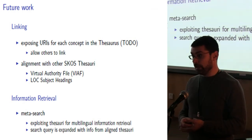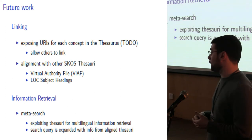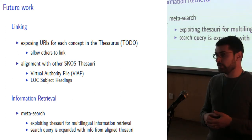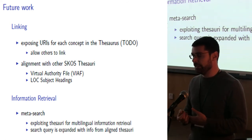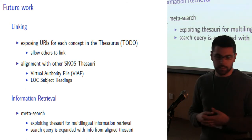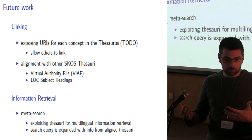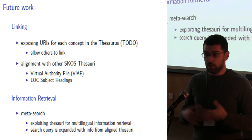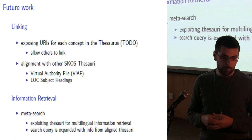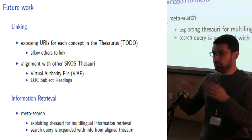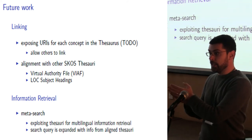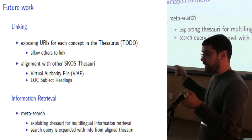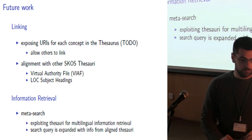For the future, the idea is exposing URIs for each of the concepts in the thesauri, in order to allow other people to link to them. Another perspective is to try to align our thesauri with the Library of Congress Subject Headings, for instance, which is now exposing data as linked open data, or the Library of Congress authority file. Things that you can do after you have converted into a more semantic format and aligned different vocabularies — for instance, to allow for meta-search, expanding queries: when you want to do a meta-search over some data and you have aligned vocabularies, you can expand the search key by looking up the word in another vocabulary. So if you're searching for one name in one language and you have aligned it with another vocabulary with labels in other languages, you can expand your query and do queries over linked resources.